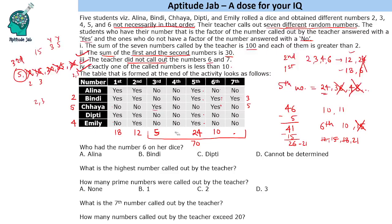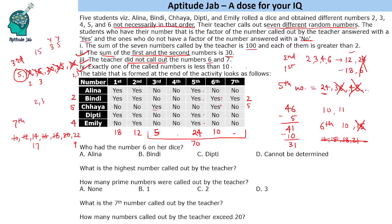The sixth number must be 10, which means Bindi had the dice number 2. With 10 confirmed, we subtract from 41 and are left with 31 for two more numbers. The seventh number must be divisible by two but not by any other dice number. Checking: 14 works (not divisible by 3, 4, 5, or 6). 22 would also work, but then the remaining number would be 9, which is less than 10 — contradicting our constraint of only one number less than ten. So the seventh number is 14 and the fourth number is 17.